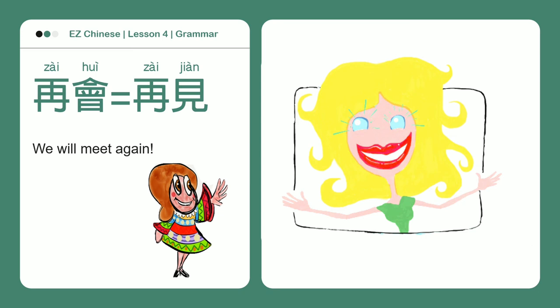再会 means the same thing as 再见, but 再会 emphasizes the act of getting together again.